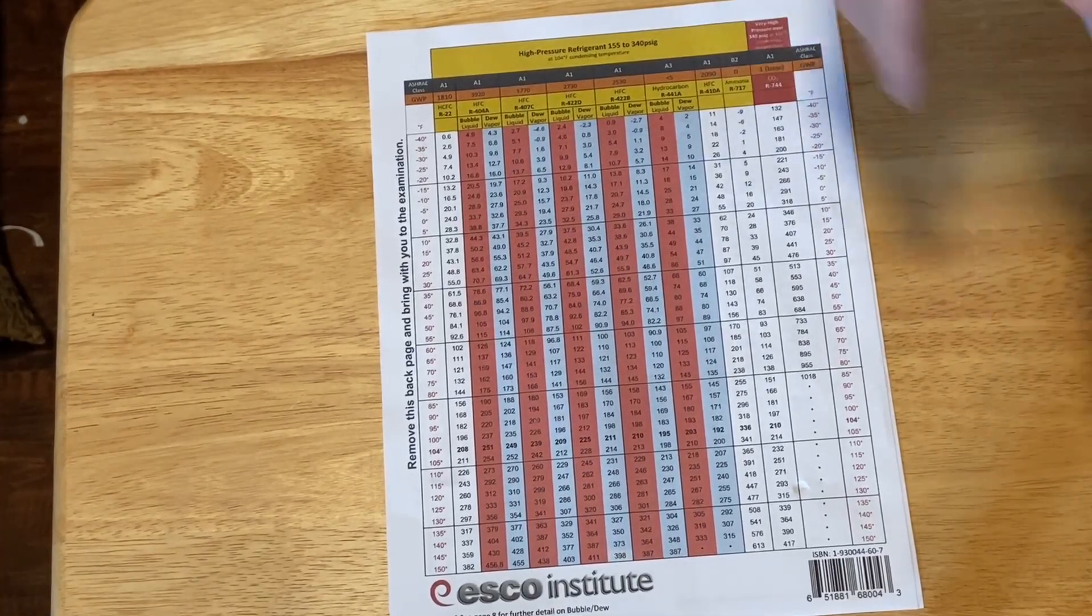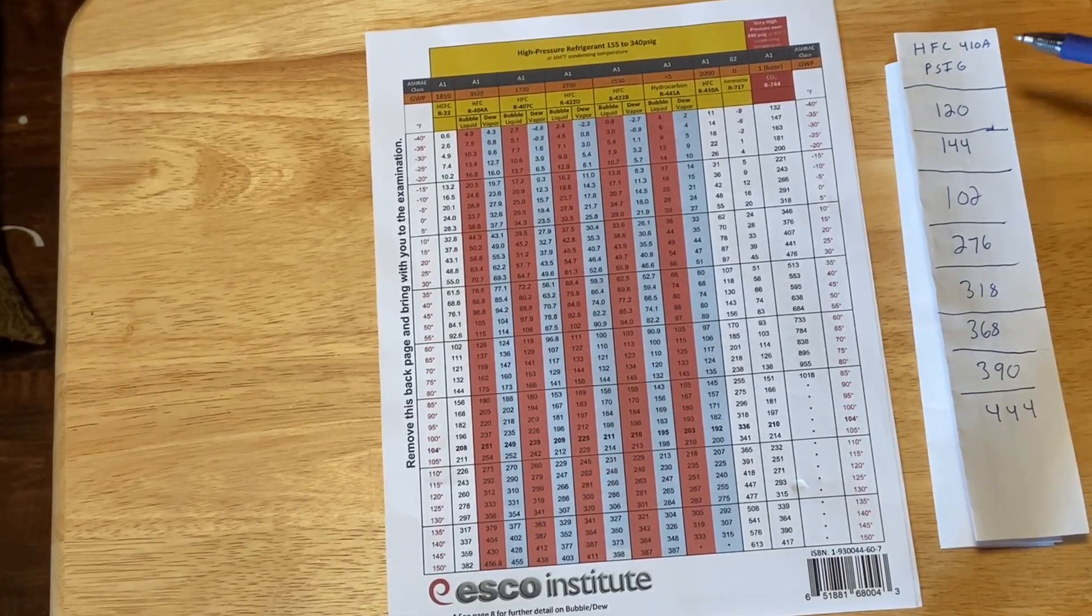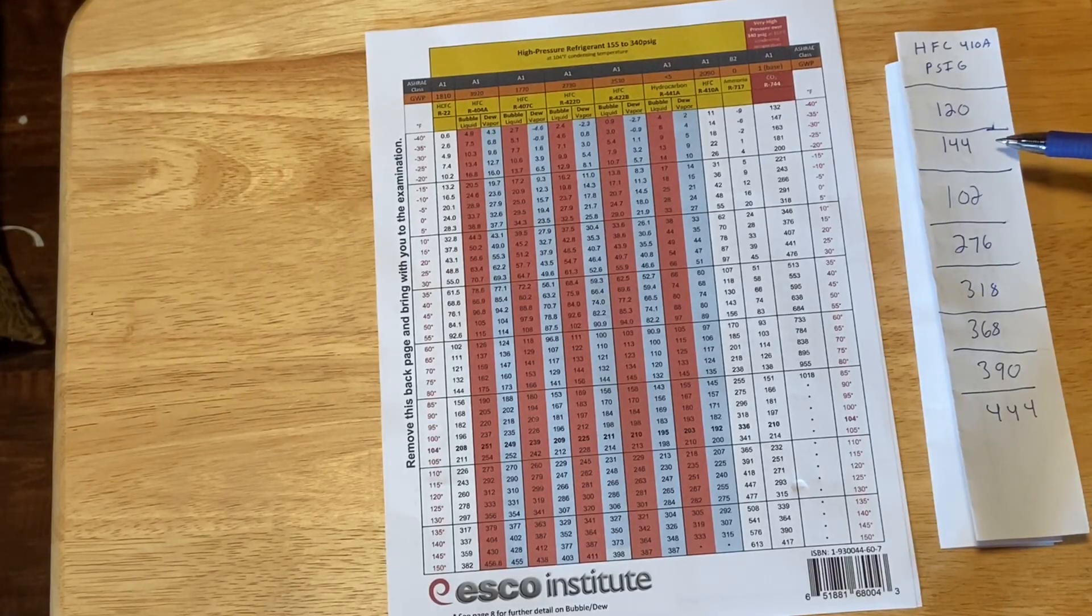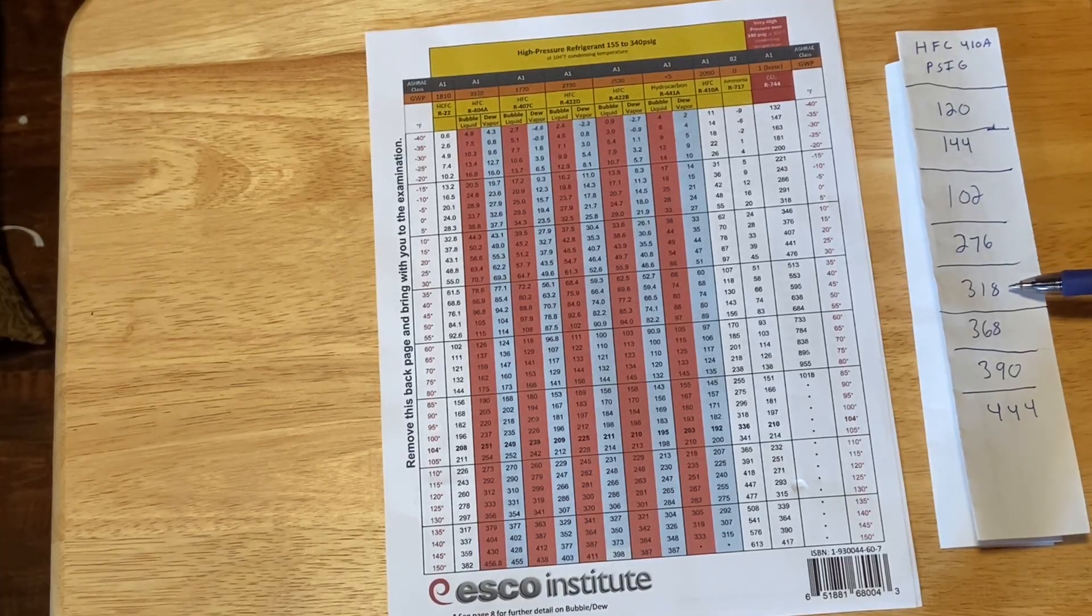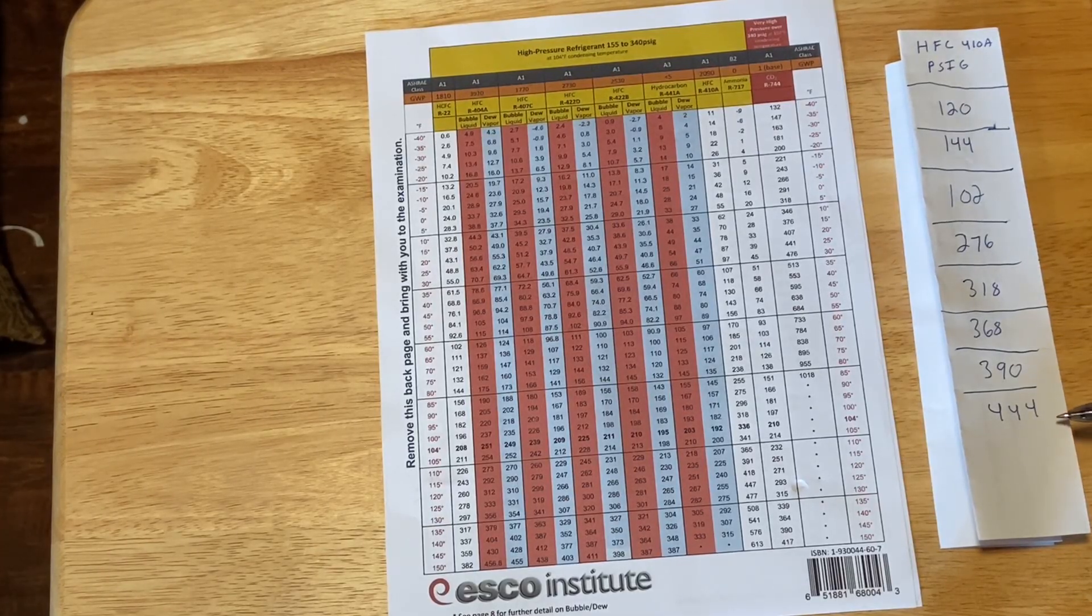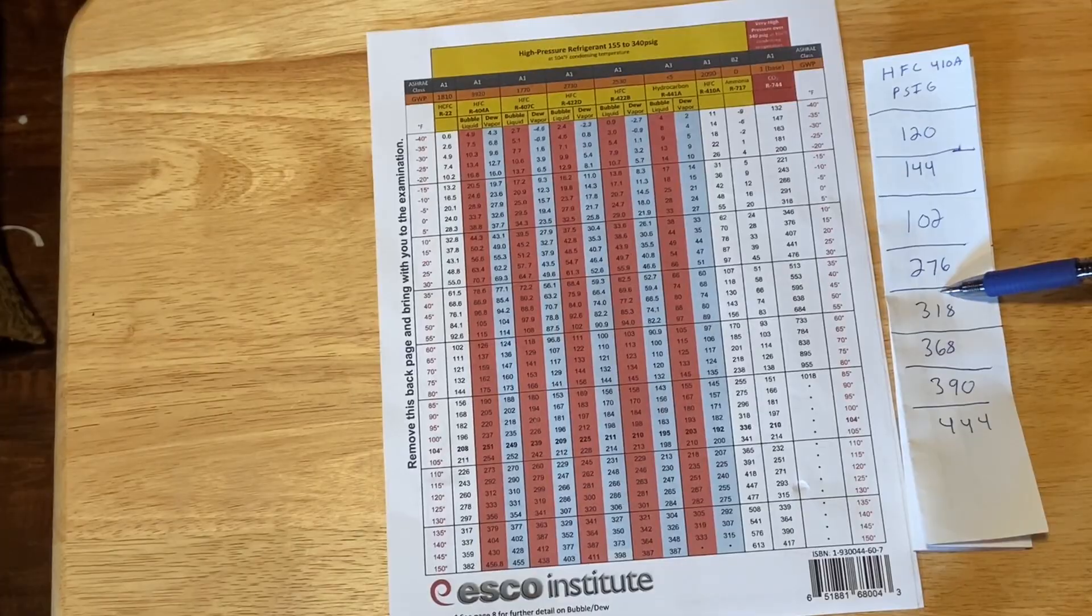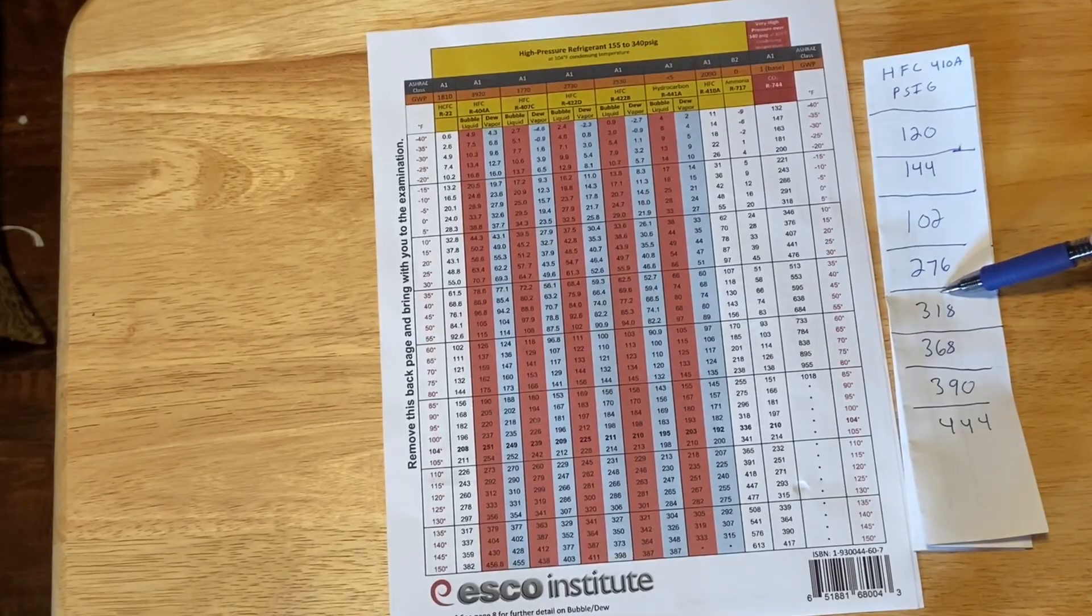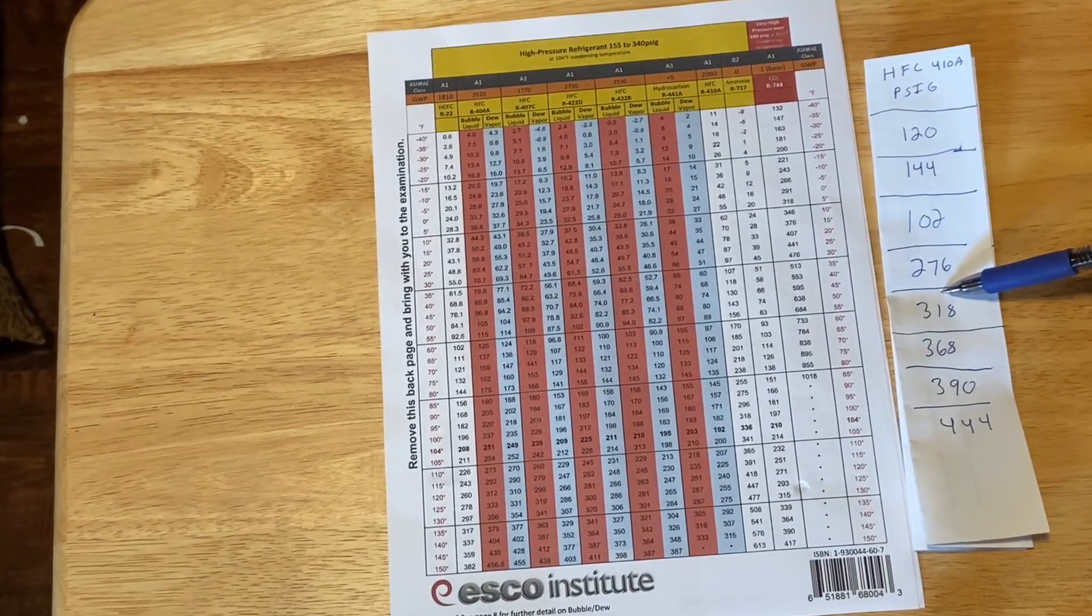What I want you to do next is I want you to write down a list that I've made of these pressures. So these are just pressures and these are for HFC 410A. So we have 120 psi, 144 psi, 120 psi, 176 psi, 318 psi, 368 psi, 390 psi, and 444 psi. So if you write these down I want you to pause the video and then find these on your temperature pressure chart. It didn't have to be this exact chart and most of them are going to be pretty close to the same. Now we're actually using a paper chart so you get practice using this before you get to your EPA test.